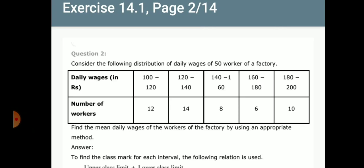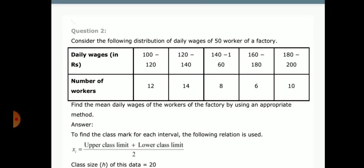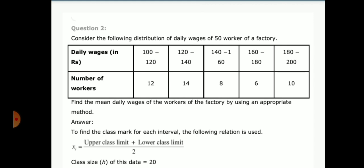Consider the following distribution of daily wages of 50 workers of a factory. Daily wages in rupees: 100-120, 120-140, 140-160, 160-180, 180-200. Number of workers: 12, 14, 8, 6, 10. Find the mean daily wages of the workers of the factory by using an appropriate method.